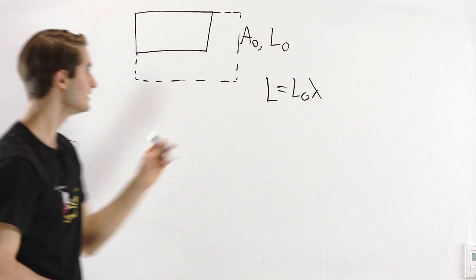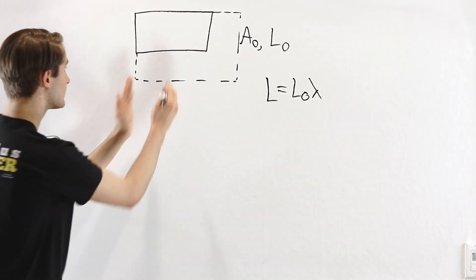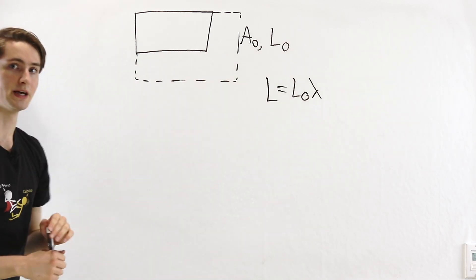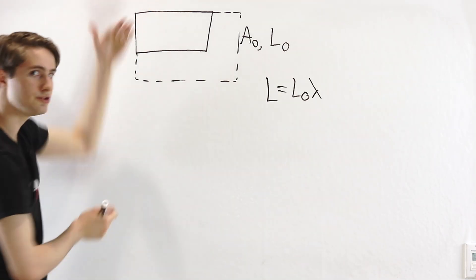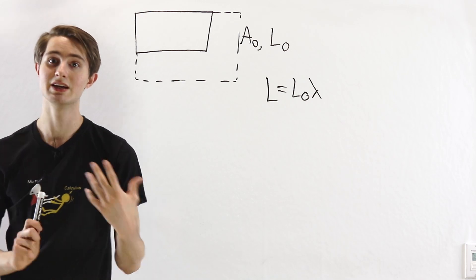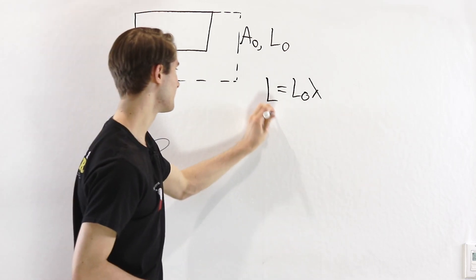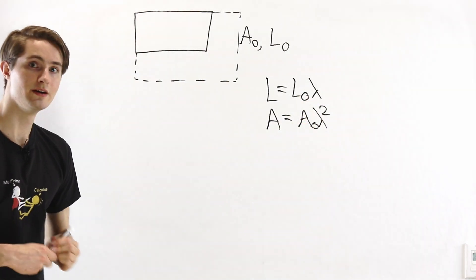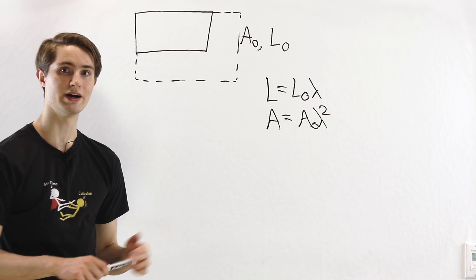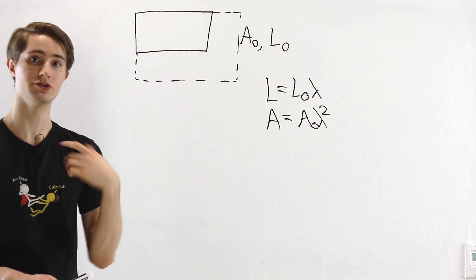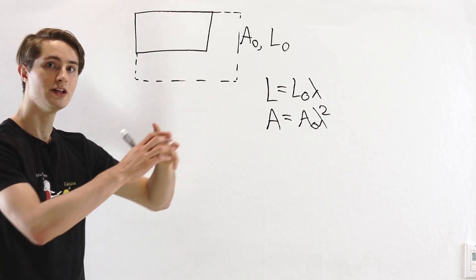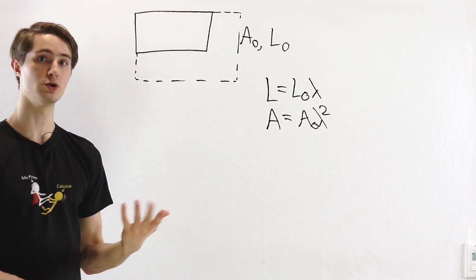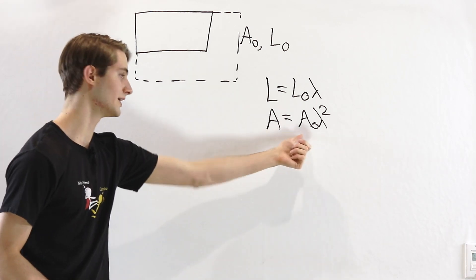The new perimeter is going to be L0 times lambda, because all the lengths become lambda times longer. On the other hand, the area is a product of lengths in both directions. So if the length in each direction gets scaled up by lambda, the area gets scaled up by lambda squared — our new area is A0 times lambda squared. For instance, a 1-by-1 square has area 1, but scaled by 2 gives a 2-by-2 square with area 4, which is 2 squared times 1.